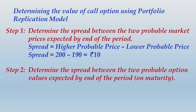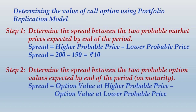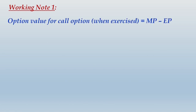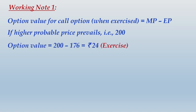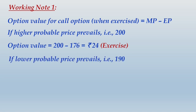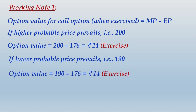Step two: determine the spread between the two probable option values expected by end of the period, that is on maturity. Spread equals option value at higher probable price minus option value at lower probable price. We have already concluded that the values of the option at the two probable prices are 24 and 14 respectively, so the spread is 24 minus 14 = rupees 10. As working note number one: for a call option when exercised, value is always market price minus exercise price. At higher probable price of 200, option value is 24; at lower probable price of 190, option value is 14.